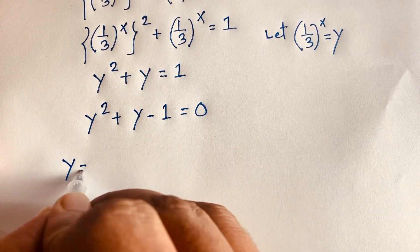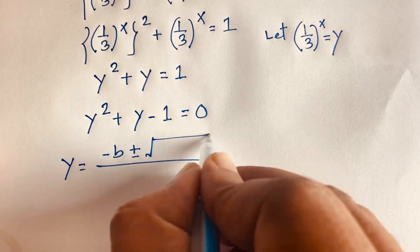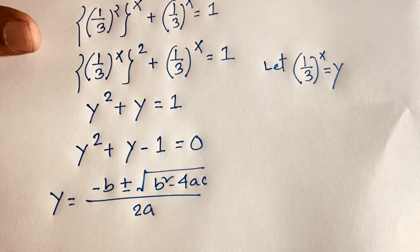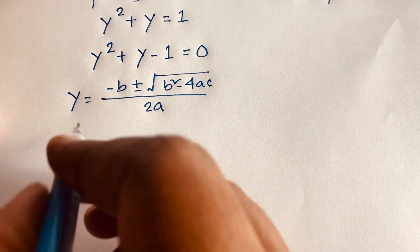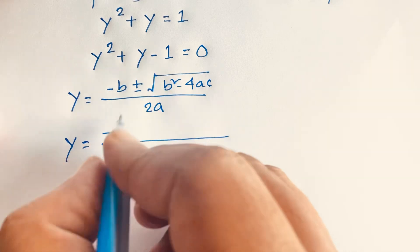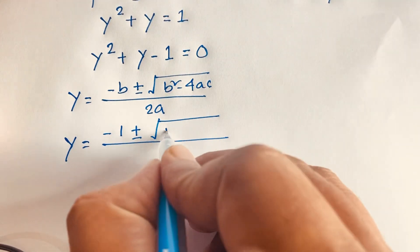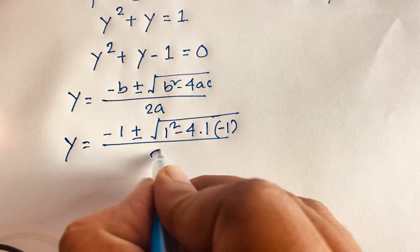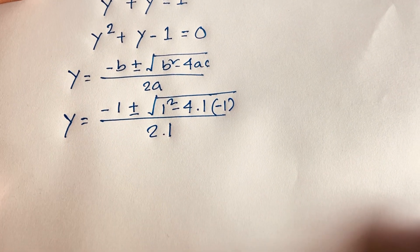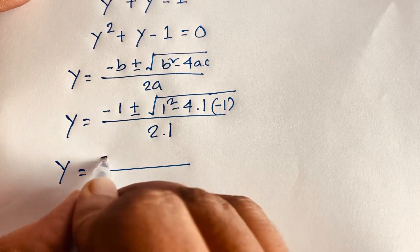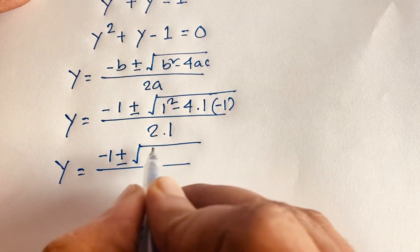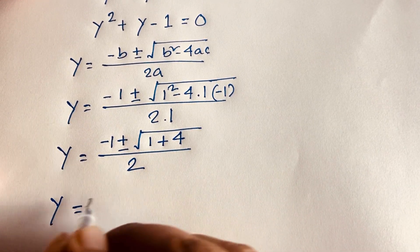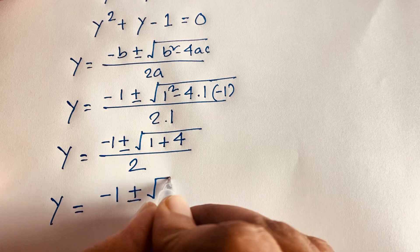I apply the quadratic formula: y equals negative b plus or minus square root of b squared minus 4ac, all over 2a. Here b equals 1, a equals 1, and c equals negative 1. So y equals negative 1 plus or minus square root of 1 plus 4, over 2, which gives y equals negative 1 plus or minus square root of 5, over 2.